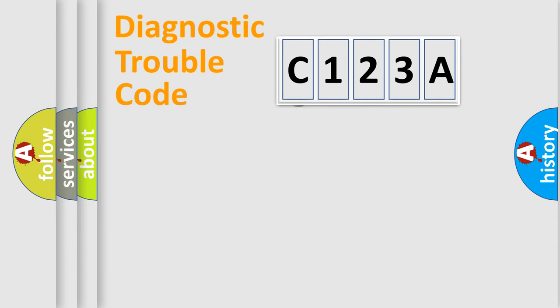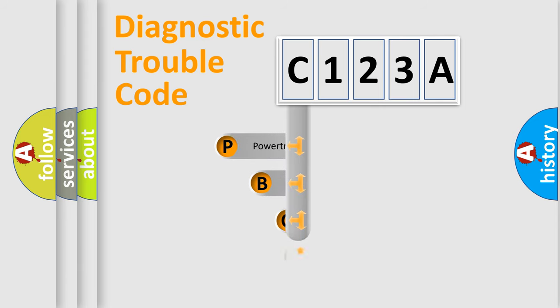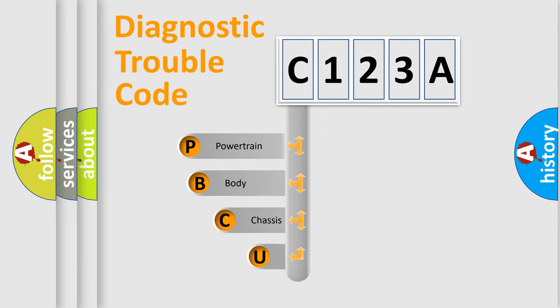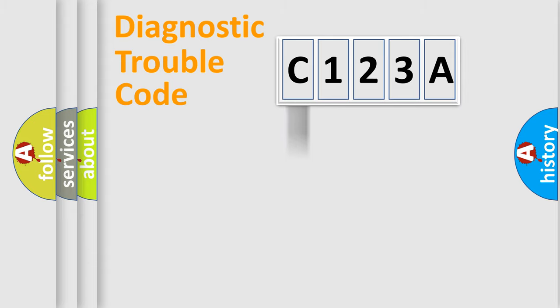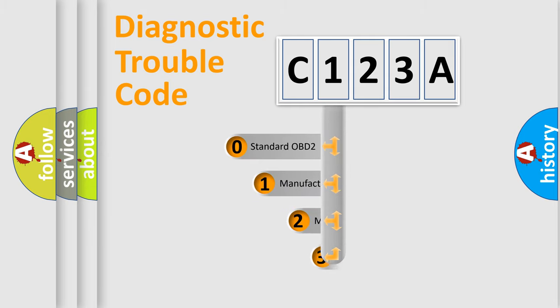Let's look at the history of diagnostic fault code composition according to the OBD2 protocol, which is unified for all automakers since 2000. We divide the electric system of an automobile into four basic units: Powertrain, Body, Chassis, and Network. This distribution is defined in the first character of the code.